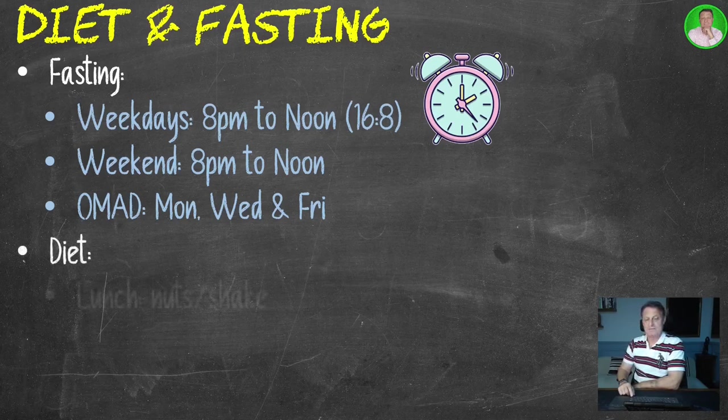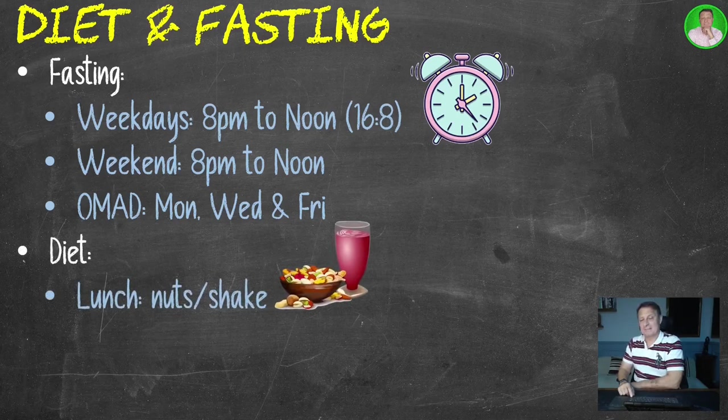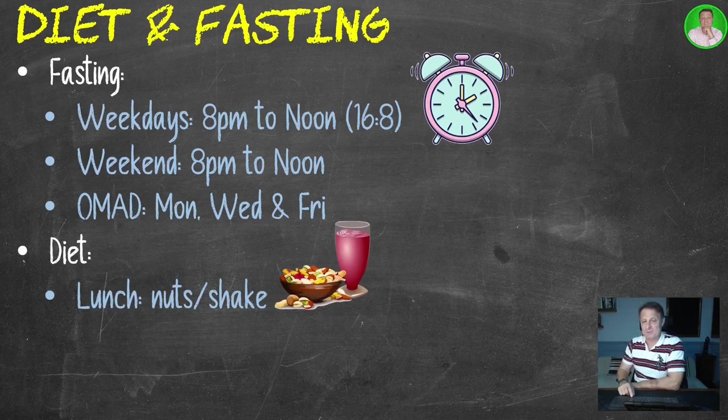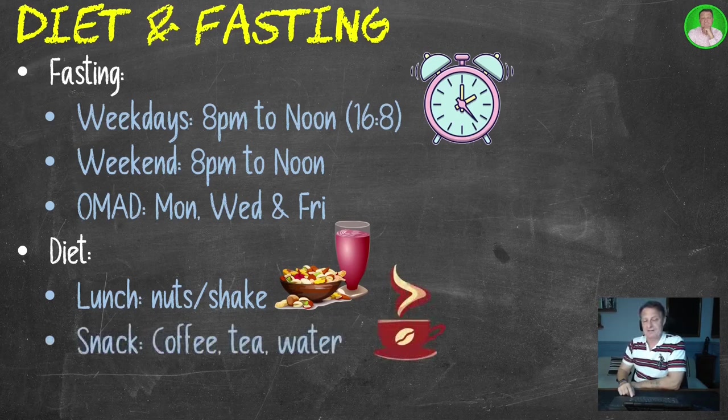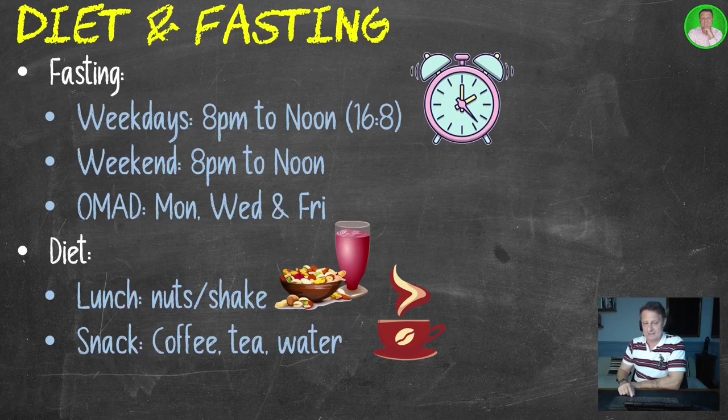For diet, there's no breakfast. For lunch, if I'm going to break my fast at noon, it's usually nuts, sometimes a shake. A lot less shakes than I had in the Middle East because we get freshly roasted locally grown peanuts here, which I add Himalayan rock salt to. If I'm going to snack during the rest of the day, it's going to be coffee, tea and water, and sometimes I'll put some heavy cream into the coffee.